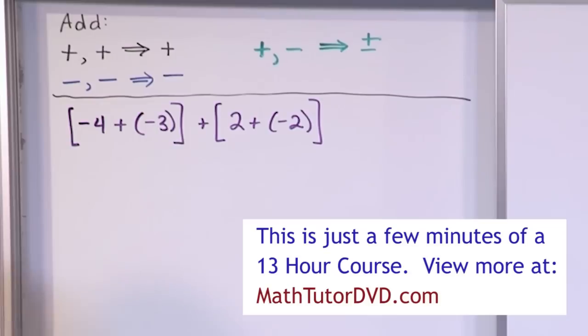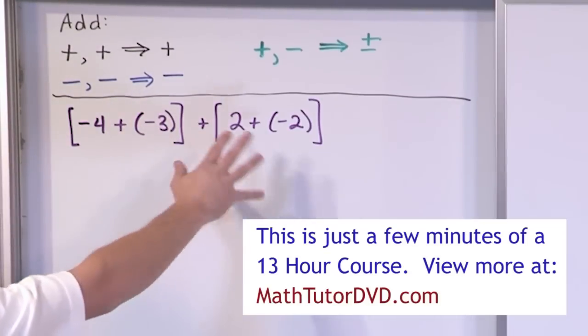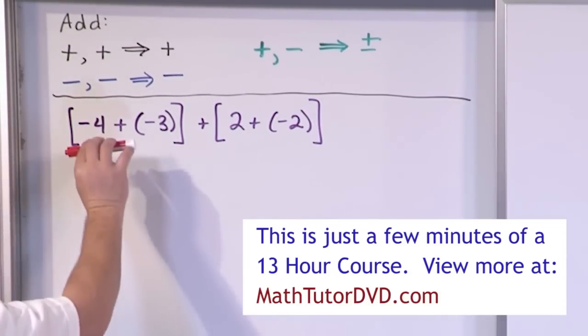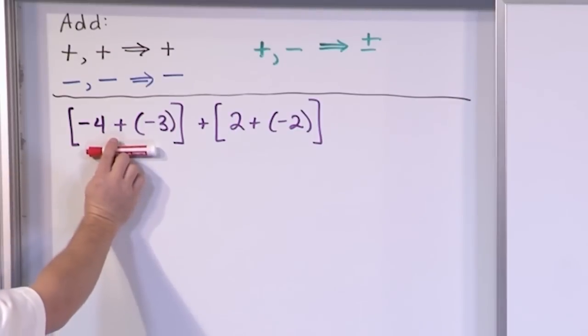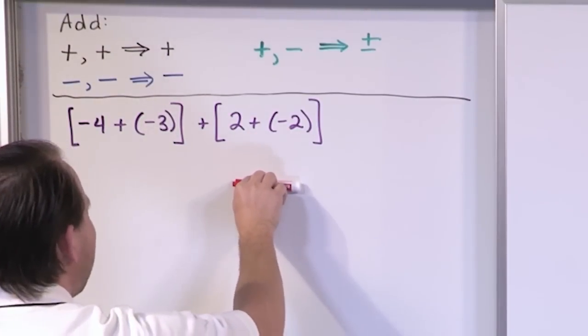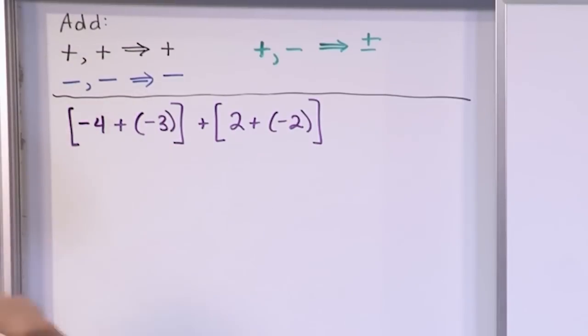So from our rules of operation, we know we can't just ignore these brackets. We have to do what's inside of them first. We're going to find out what the answer to the inside of this is, and we're going to find out the answer of what's inside here, and then finally we can add those two results together.